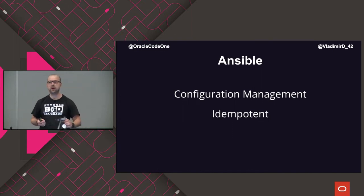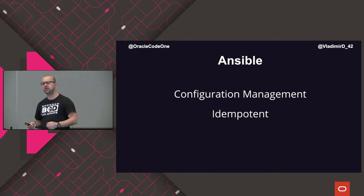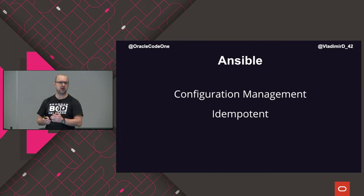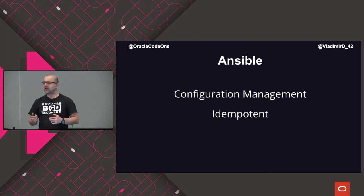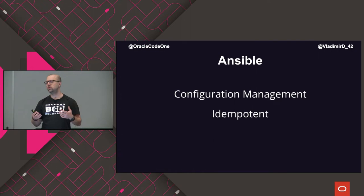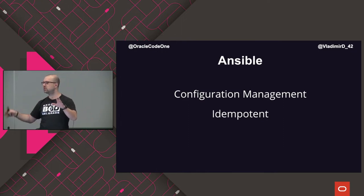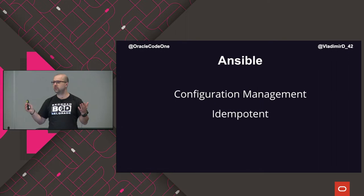The way Ansible achieves idempotency is very clever. When we tell Ansible what needs to be done, we don't say how to do it. We say: this is the machine, this is the end state I want it to be in — and Ansible figures out the how. Which means if the machine is already in that state, Ansible says 'done, I don't have to do anything here.' This is unlike database scripts where you always wonder 'did I run this or not?' In Ansible, if you rerun it, it's already taken care of.